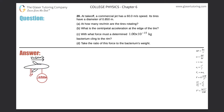Problem 20: At takeoff, a commercial jet has a speed of 60 meters per second and its tires have a diameter of 0.850 meters. Part A asks how many revolutions per minute the tires are rotating. Here's the jet traveling with a linear speed of 60 m/s. We need to think about what variable those units correspond to — revolutions per minute are units of angular speed, or angular velocity.